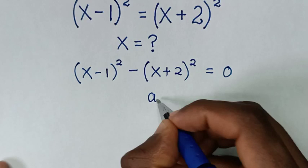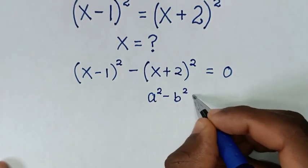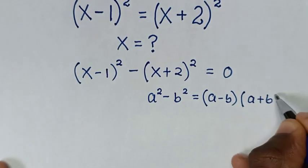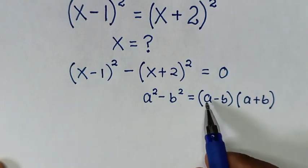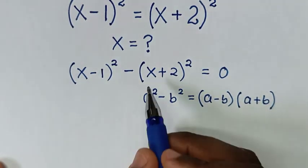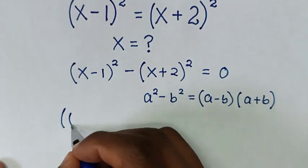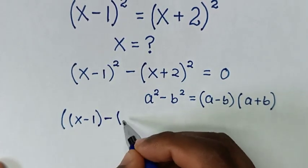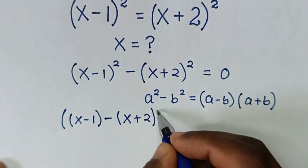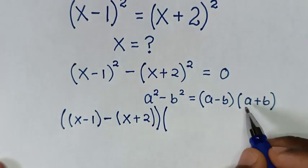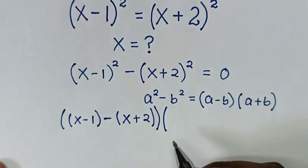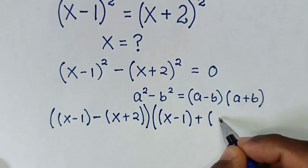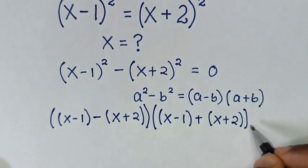We'll apply the rule: a squared minus b squared is equal to (a minus b) times (a plus b). So a minus b is (x minus 1) minus (x plus 2), and a plus b is (x minus 1) plus (x plus 2), all equal to 0.